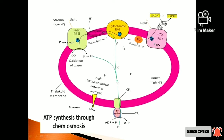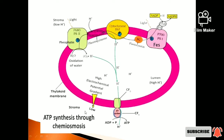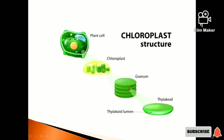ATP synthesis is created by the proton gradient of the chloroplast. This is the thylakoid membrane. This is the plant cell — it is a chloroplast cell within the organ.